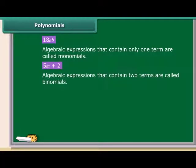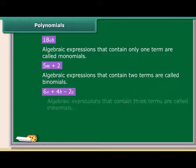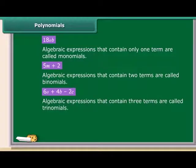This type of algebraic expression is called binomial. The expression 6A plus 4B minus 2C is not a binomial because it has three terms, right? So, this type of algebraic expression is called trinomial.